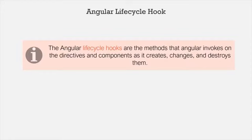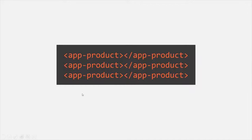When a new component is created in Angular and when it finds one of the selectors, it will instantiate the new version of that component and add it to the DOM. For example, here we are using the selector of the product component three times, so Angular will instantiate the product component three times. Every time Angular finds a component selector, it will instantiate that component class.